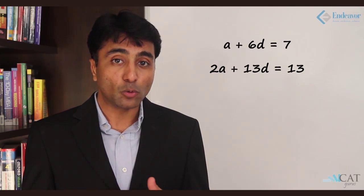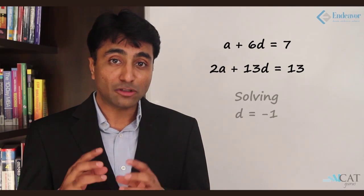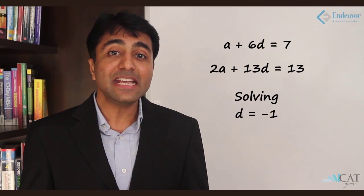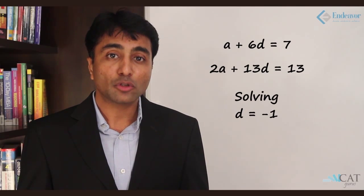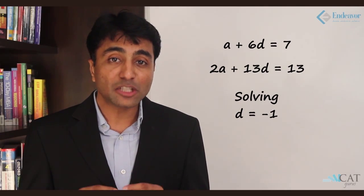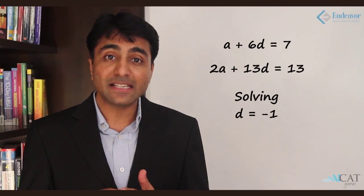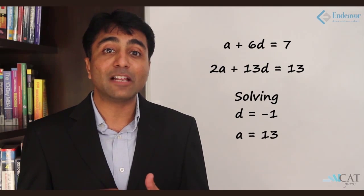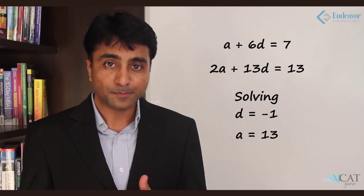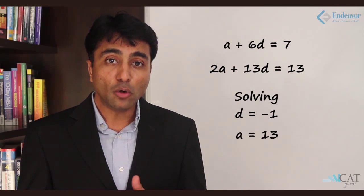Solving both equations simultaneously gives d equals minus 1. Substituting d equals minus 1 into a plus 6d equals 7, we get a equals 13. Now coming to the second part of the question: the sum up to 28 terms is equal to k times the 28th term.